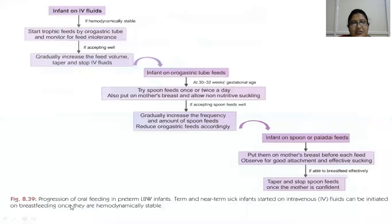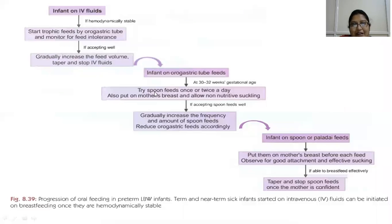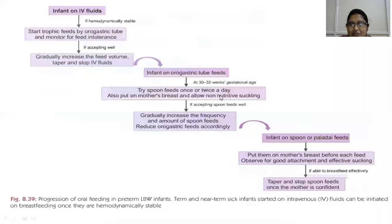There is a flow chart showing progression of oral feedings in preterm low birth weight infants. Term and near-term sick infants started on IV fluids can be initiated on breastfeeding once hemodynamically stable. Start trophic feeds by orogastric tube and monitor for feed intolerance; if accepting well, gradually increase feed volume, taper and stop IV fluids. At 30 to 32 weeks on orogastric tube feeds, try spoon feeds once or twice a day and put on the mother's breast to allow non-nutritive sucking. Non-nutritive sucking in preterms promotes maturation of lactation skills and milk production, even though it doesn't meet fluid and nutritive requirements.